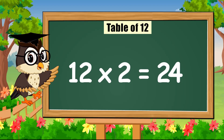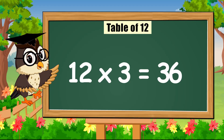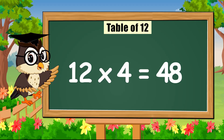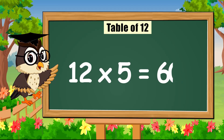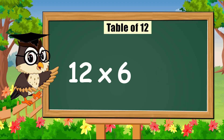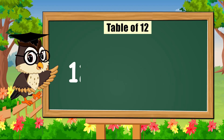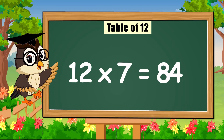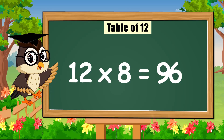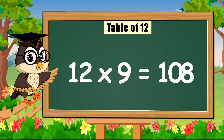Twelve times three is thirty-six. Twelve times four is forty-eight. Twelve times five is sixty. Twelve times six is seventy-two. Twelve times seven is eighty-four.